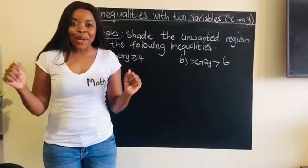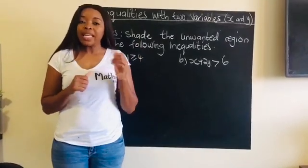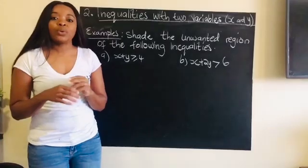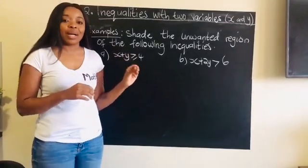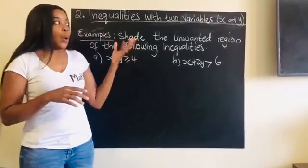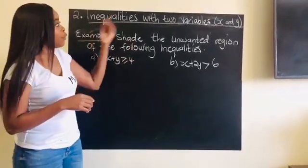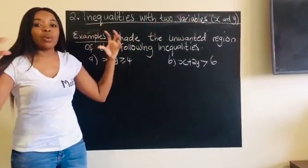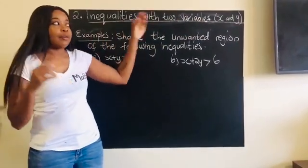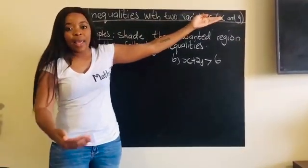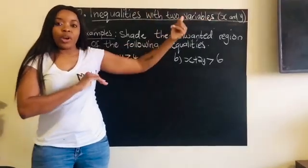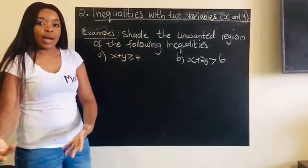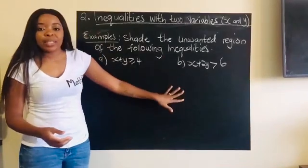Hi everyone. We are going to continue with linear programming, and this time we are looking at the second part of linear programming where we have two variables involved — meaning in one inequality we have both x and y, and not the other way around where we only had x or only y.